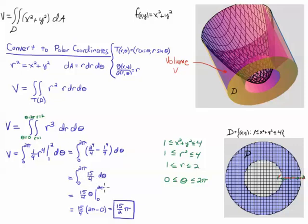Which means we just get a theta, so I have a 2 pi minus 0, once I input those values, and we end up with, because the 2 and the 4 cancel, we end up with 15 over 2 pi, and that's it. Alright, good luck.